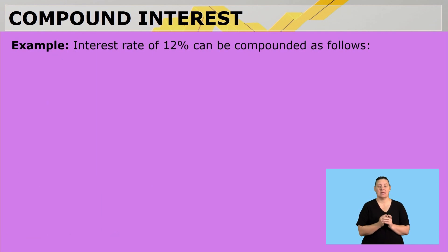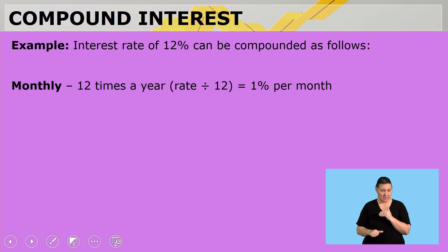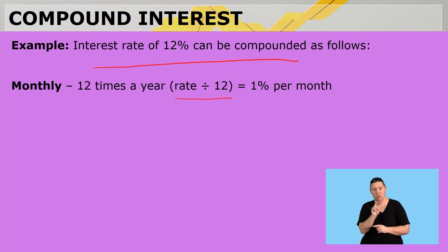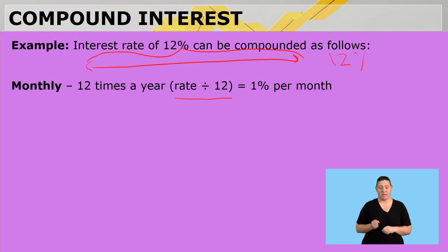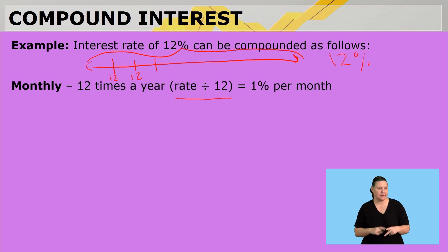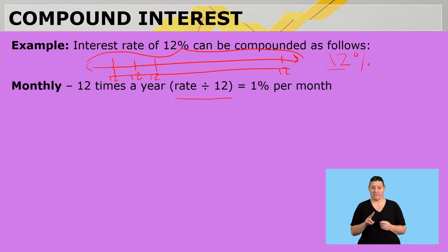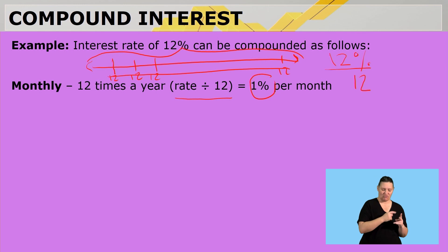For example, an interest rate of 12% can be compounded as follows. If it's monthly, the interest applies 12 times a year, so you divide your rate by 12. Over one year you need to earn 12%, but you can't earn 12% in January, 12% in February, 12% in March, going up to December — that doesn't make sense. So the 12% is divided by 12, giving 1% in January, 1% in February, and so on.